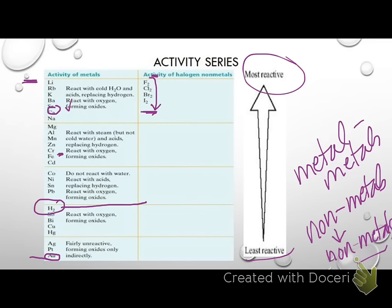For our purposes, don't worry about the detailed notations on the side. If it's above hydrogen, we're going to say it replaces it — that's more for pre-AP. Just mark it out and ignore it. You just want to know if it's above hydrogen, then it will replace it. So here we go with a couple of examples.